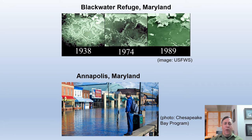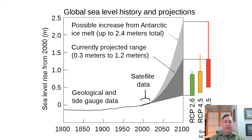Melting land ice and thermal water expansion are raising ocean levels — they have already risen an average of 20 centimeters since 1900. Sea level rise has dramatic effects in flat areas, and it is accelerating. More than 5,000 acres of wetlands have been lost in Blackwater National Wildlife Refuge since the 1930s. Annapolis, Maryland, where I live, is flooded by normal high tides now — it experienced 63 high tide floods in 2017, compared with about 4 in the early 1960s. Sea level is projected to increase up to 2.4 meters by 2100, and we are seeing dramatic tipping points in Greenland and Antarctica, with major ice sheets collapsing into the sea.